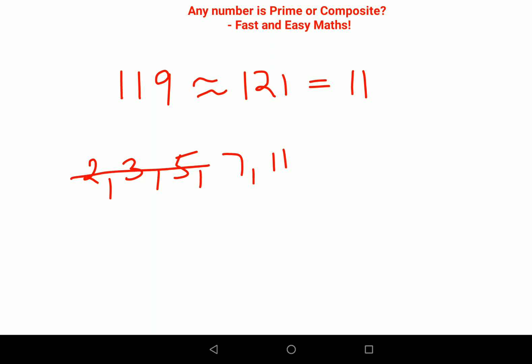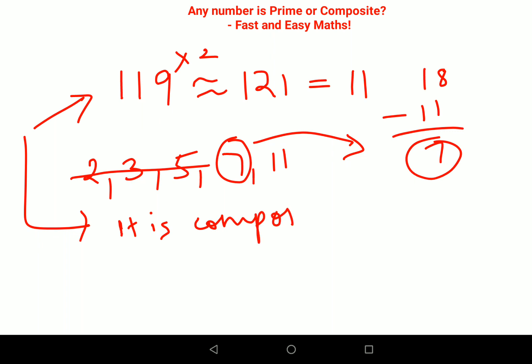2, 3, 5 obviously they are not dividing 119. Now for 7, let's do the trick. 9 into 2 gets you 18, 18 minus 11 gets you 7. So obviously 7 is completely divided by 7, so I can say that this 119 number is getting divided by 7. Therefore it is a composite number, it is not a prime number.